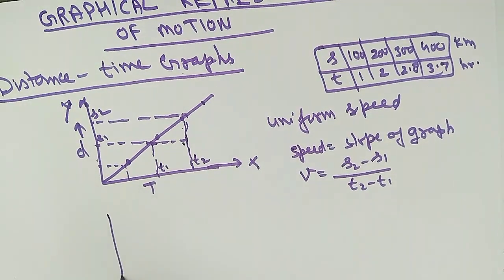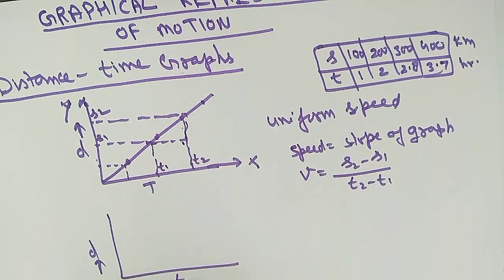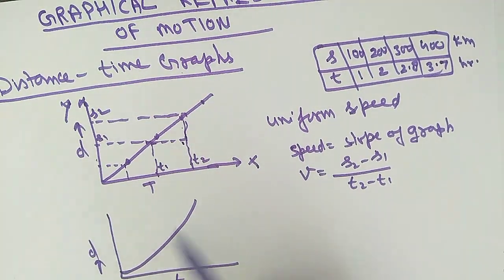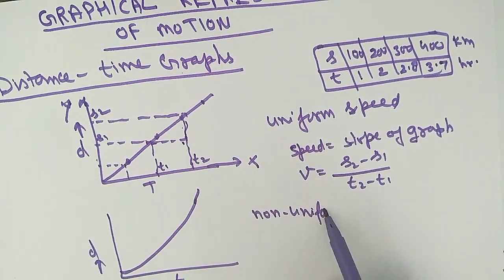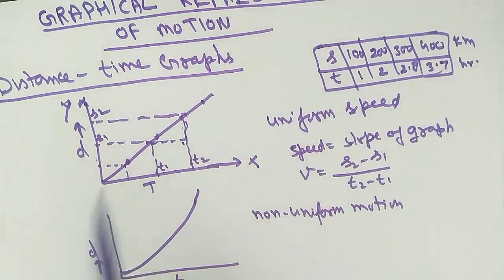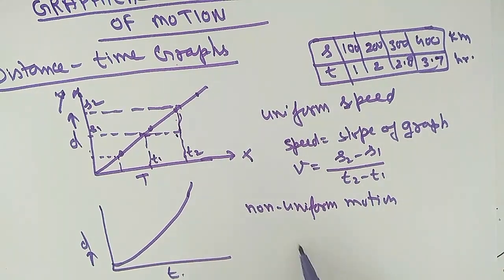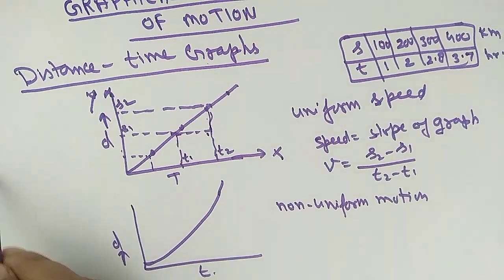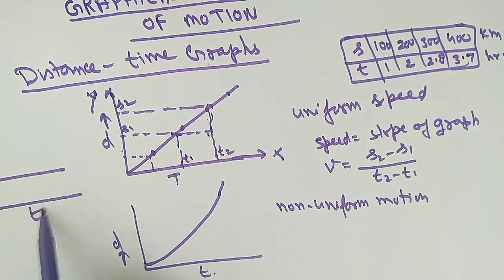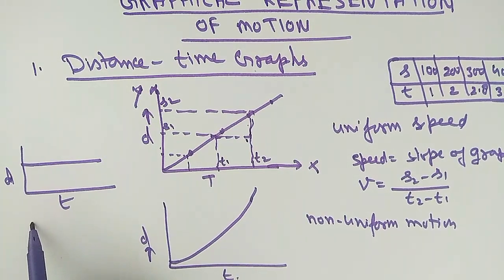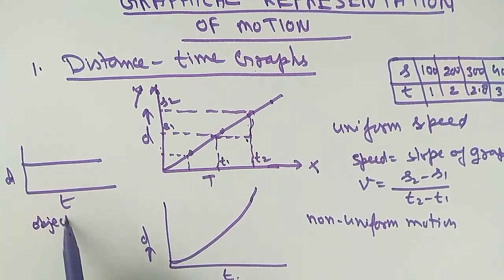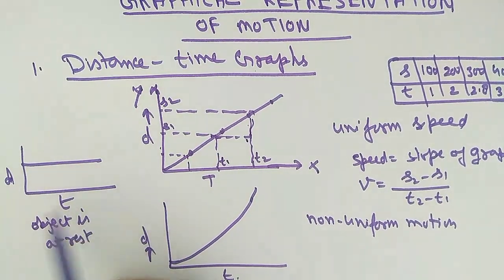Another type of DT graph is a curve. If the graph is curved, there is no equal change in equal intervals of time, so it represents non-uniform motion. Another type: if the distance d remains constant while time t keeps changing, the body is not covering more distance — this means the object is at rest.